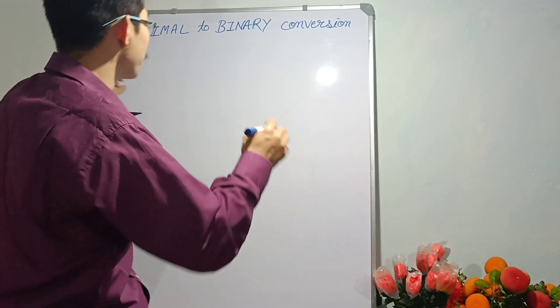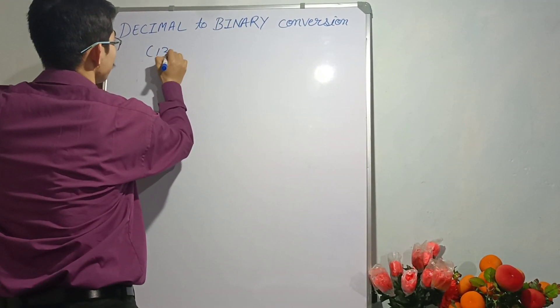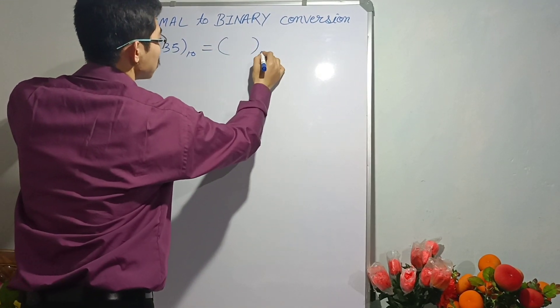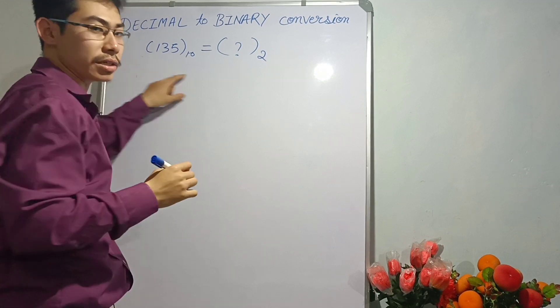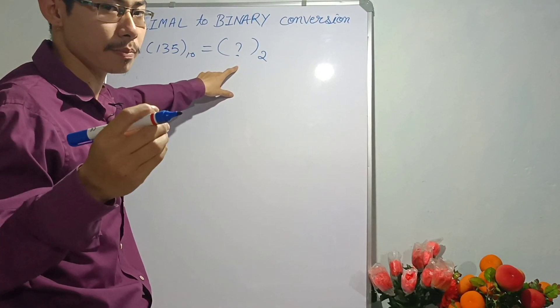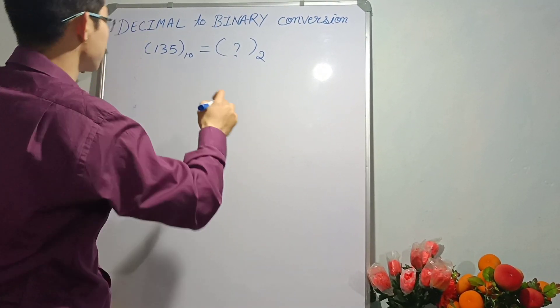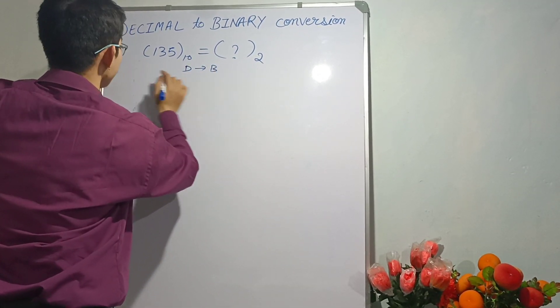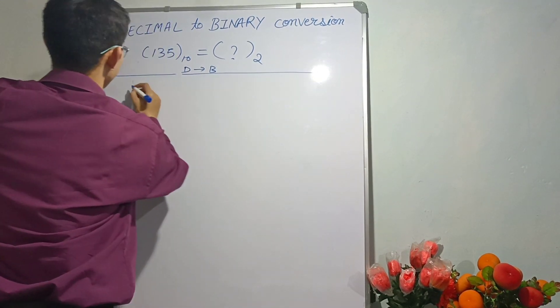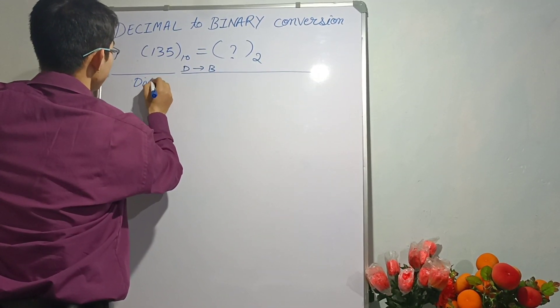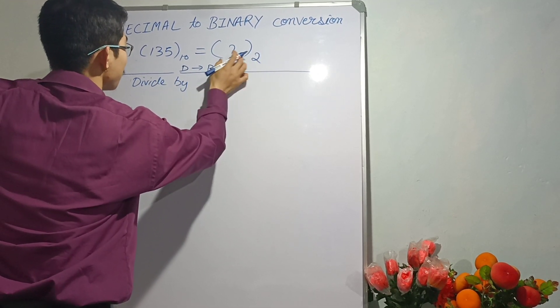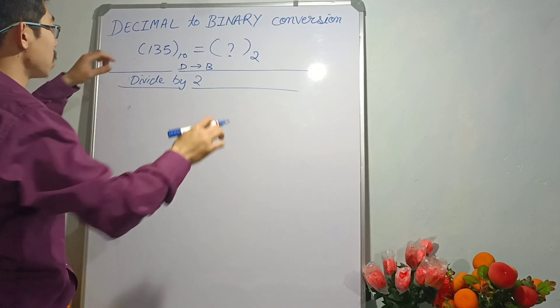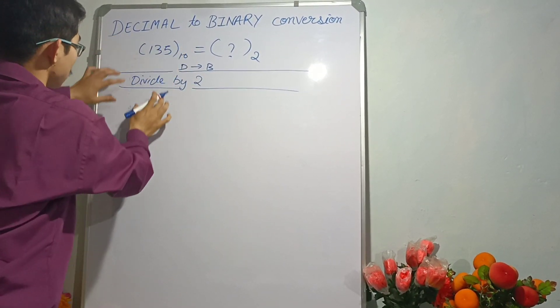Suppose we are given a number 135 to the base 10. We need to convert it into binary. The step we're gonna follow is: when there is a decimal number and we have to convert into binary, we will divide by the base of binary which is 2.